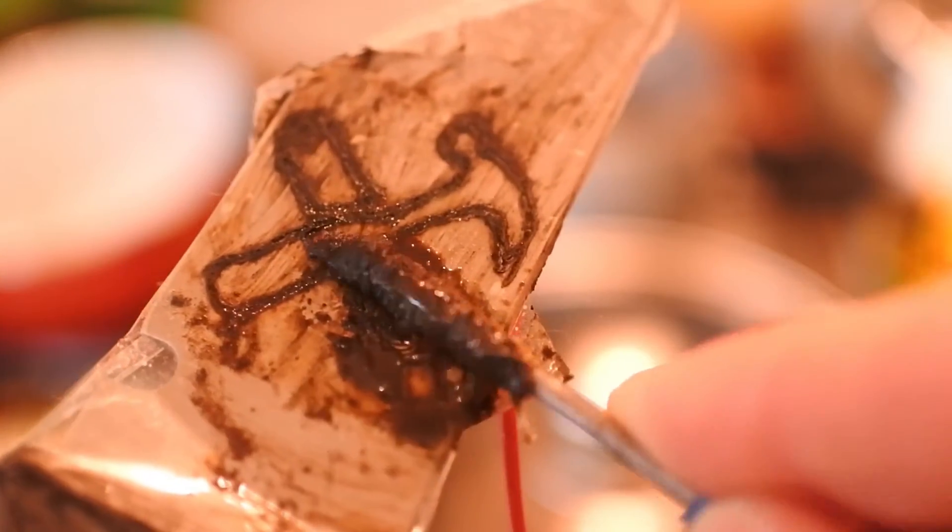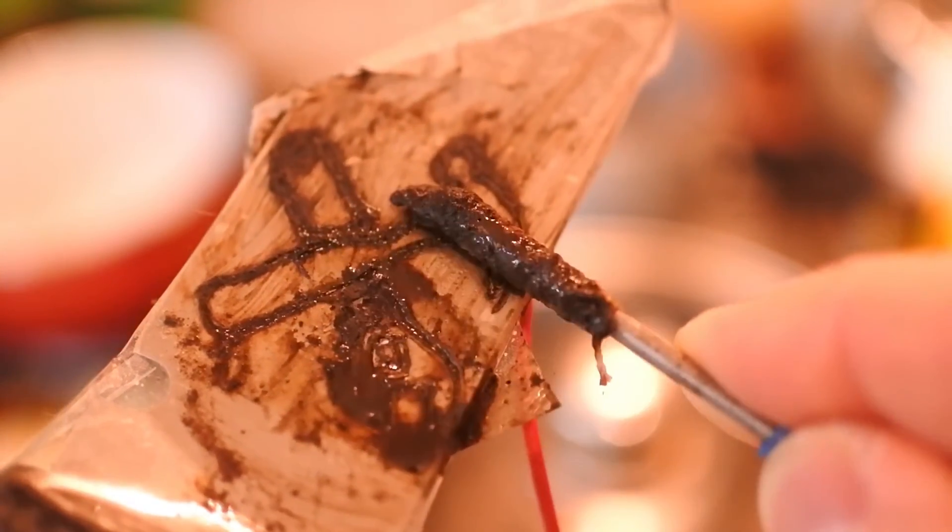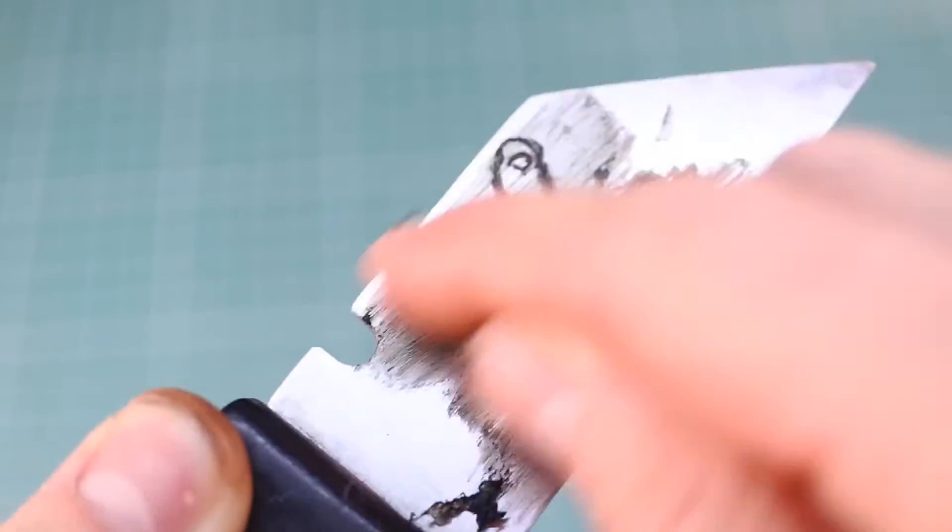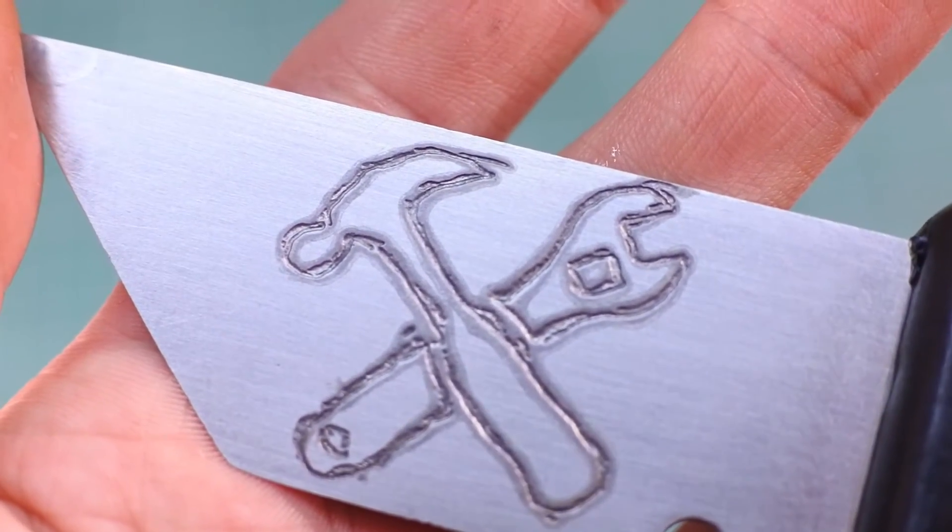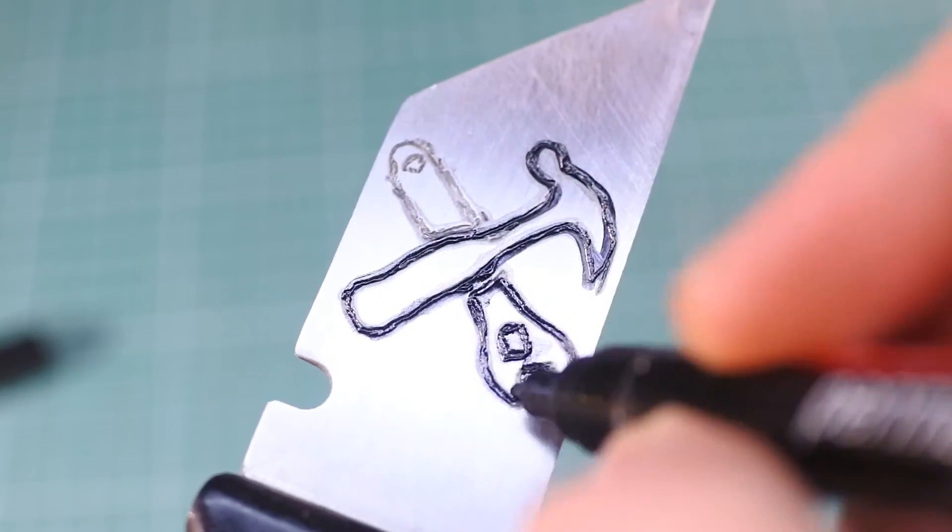Also the more powerful your power supply is, the faster etching process will be. Two minutes later you can rip off the tape and clean the surface. So your picture is almost done. Just stroke it with marker to make it more contrast and sharp.